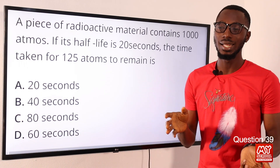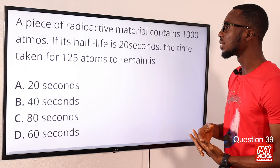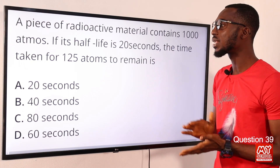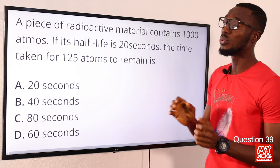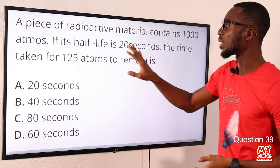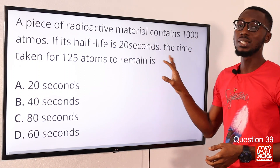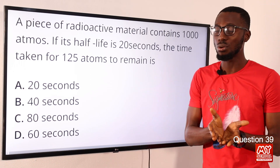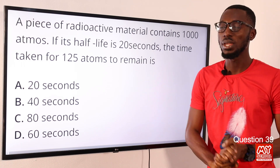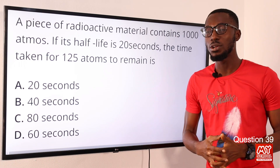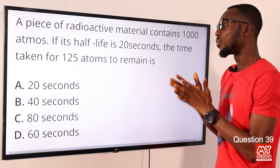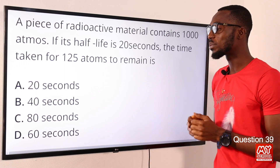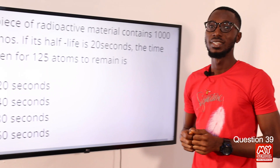Question 39: A piece of radioactive material contains 1000 atoms. If its half-life is 20 seconds, the time taken for 125 atoms to remain is calculated as follows: after 20 s → 500 atoms; after 40 s → 250 atoms; after 60 s → 125 atoms. So the time taken is 60 seconds. The correct option is option D.